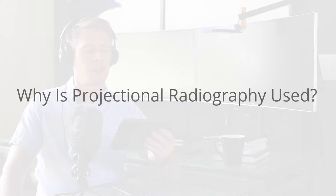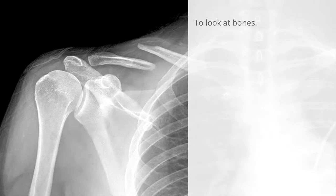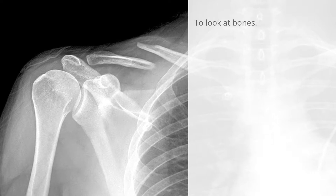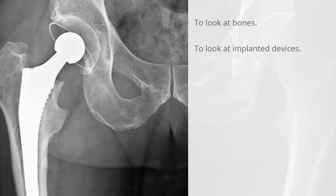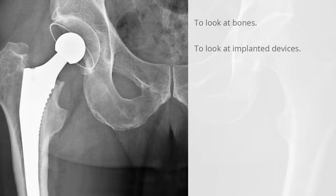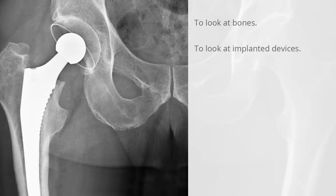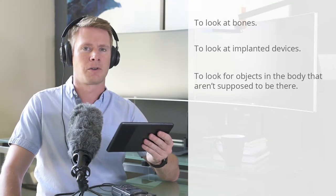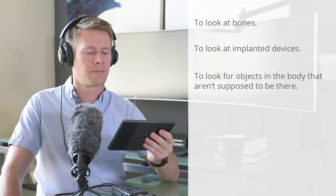Projectional radiography is often used for the following purposes: to look at bones in order to see bone fractures, find bone pathology, and to measure bones for growth studies; to look at implanted devices such as an artificial knee or hip; and to look for objects in the body that aren't supposed to be there.